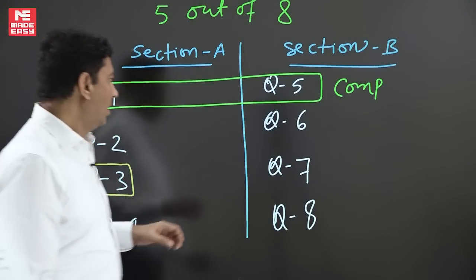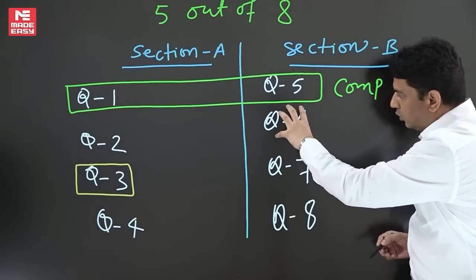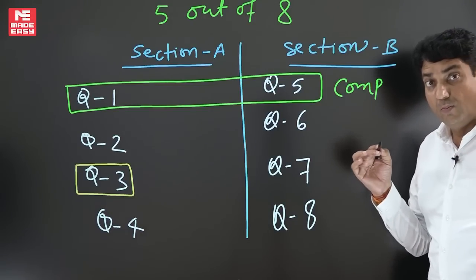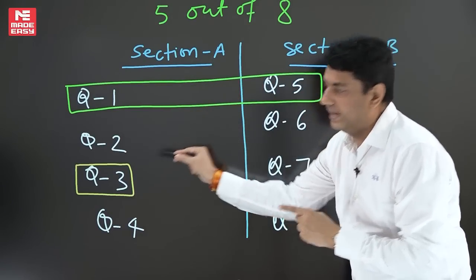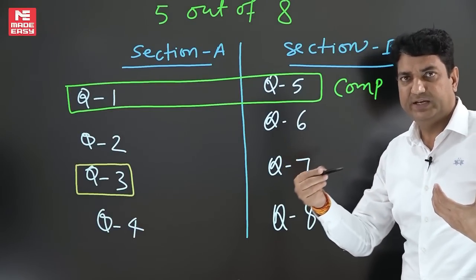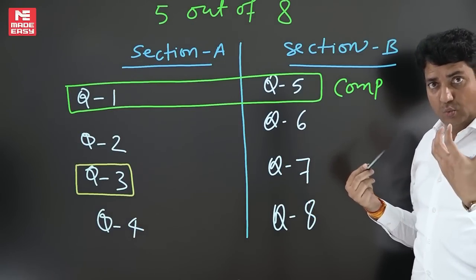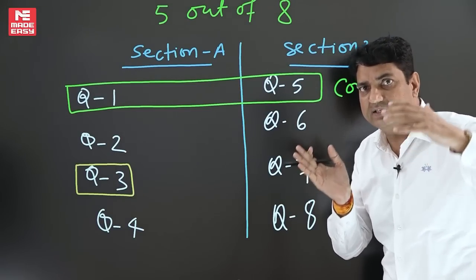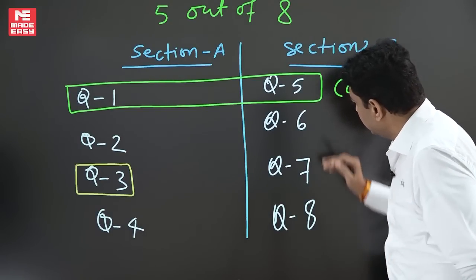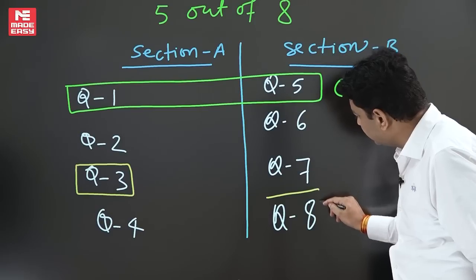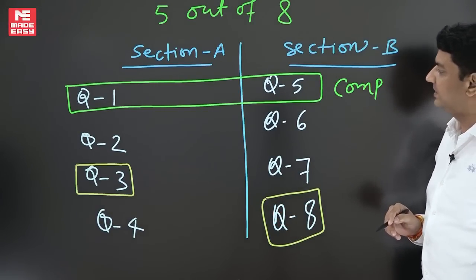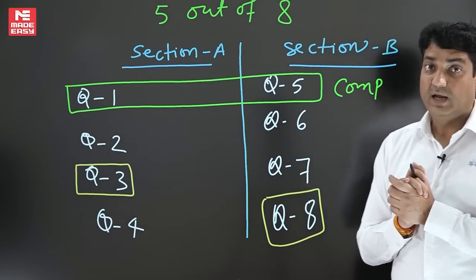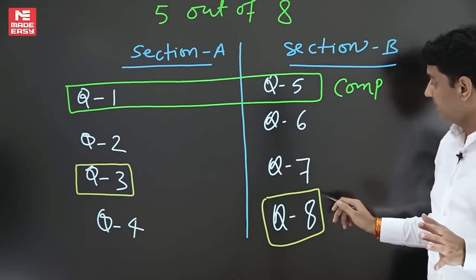Let's say you choose question number three. This is my selection - question number three. Then you have to choose one best out of the sixth, seventh, and eighth which is most scoring. When you want to attempt in total all the sections, whichever is the best combination for you, you need to select. Let us consider the eighth question is best in Section B. So you have decided question three and question eight from these two sections. Now four questions are done.